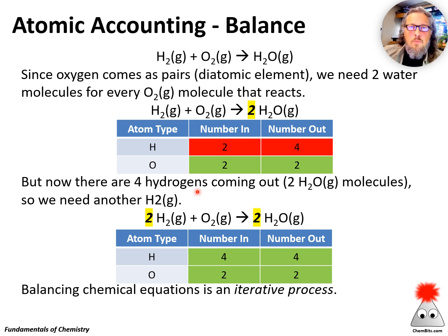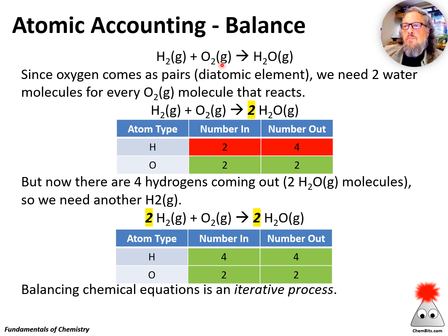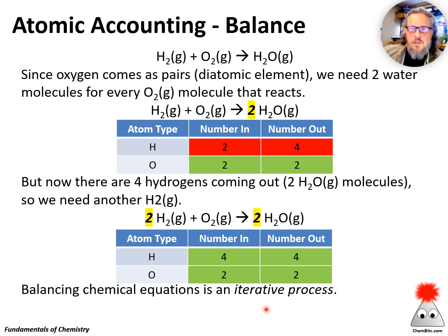This type of process you're going to see over and over again when you balance chemical equations. You'll identify a problem with the equation not being balanced, and you might fix one thing, but that ends up breaking something else that you then have to go in and fix. So this is an iterative process — we have to do the steps multiple times in order to get to a good final answer.